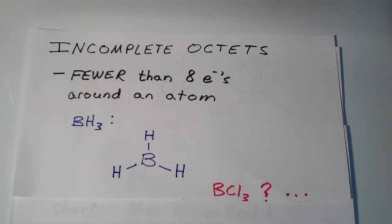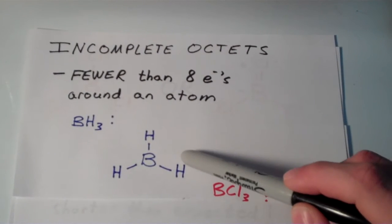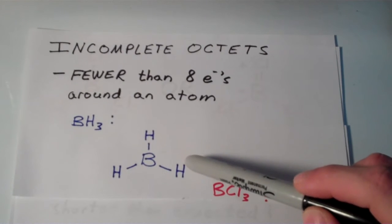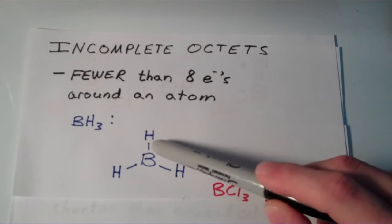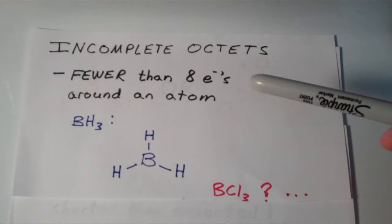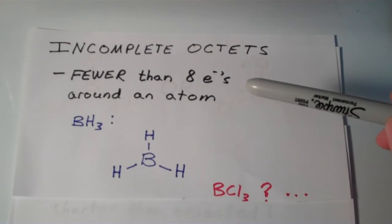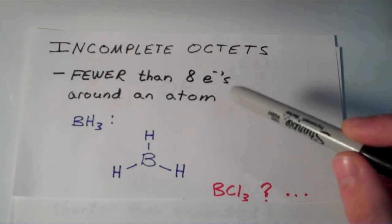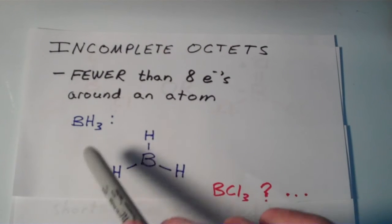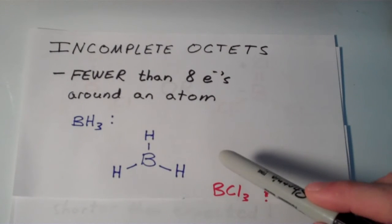Normally, to give octets to central atoms, we take lone pairs from the adjacent or bonded atoms and move them into the bonding region between the two atoms. That usually gives central atoms an octet, but notice that in the case of BH3, this is impossible because the hydrogen atoms lack such lone pair electrons.